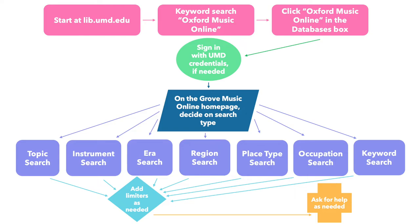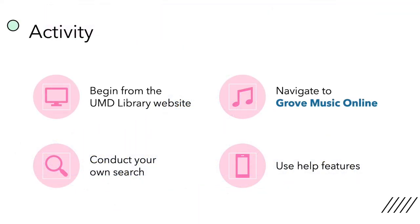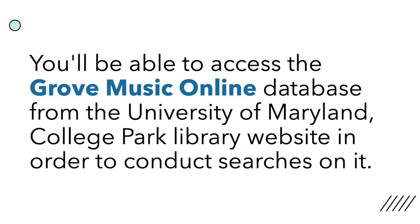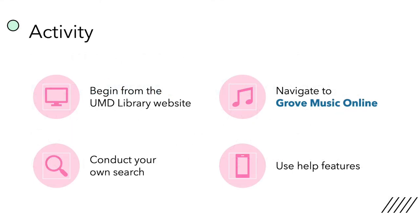Now that you know how to get to the Grove Music Online database, let's talk about the exercise you're going to do. In order to practice the skills we've learned, you're each going to start from the library homepage and navigate to Grove Music Online on your own. Then you're going to conduct your own search on a topic of your own choice using whatever type of search or limiters you think you need. The goal of this activity is to help us achieve our learning outcome: by the end of this video, you'll be able to access the Grove Music Online database from the University of Maryland College Park Library website in order to conduct searches on it. I'm also encouraging you to use Grove Music Online's built-in help features before asking me or one of the other librarians for help, in order to strengthen your problem-solving skills within the Grove Music Online ecosystem.